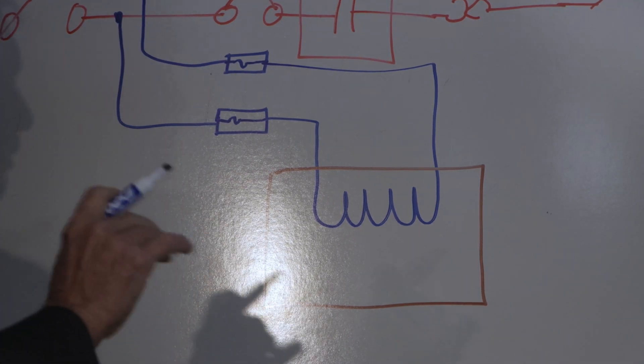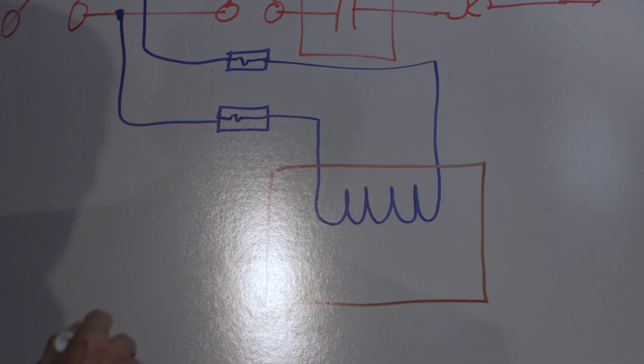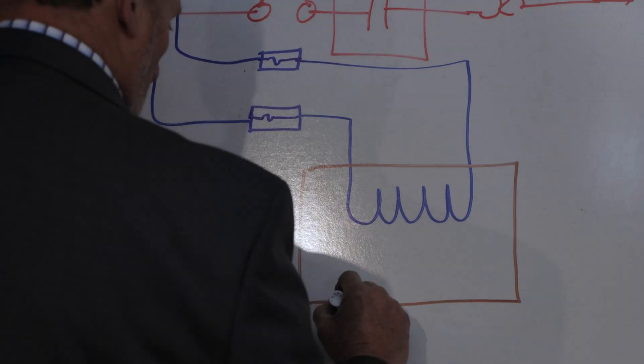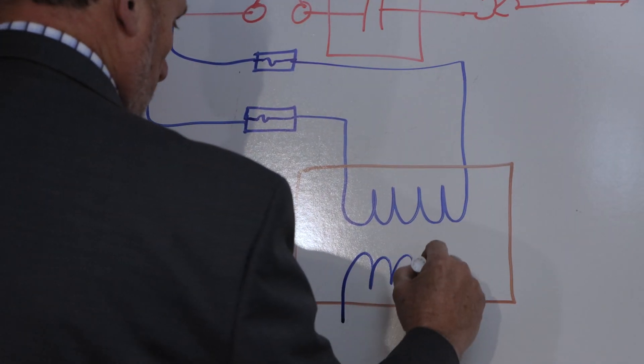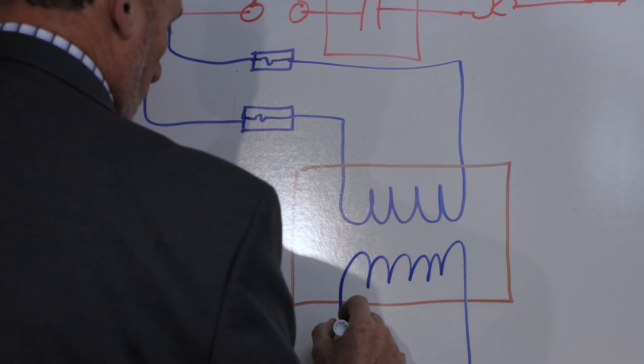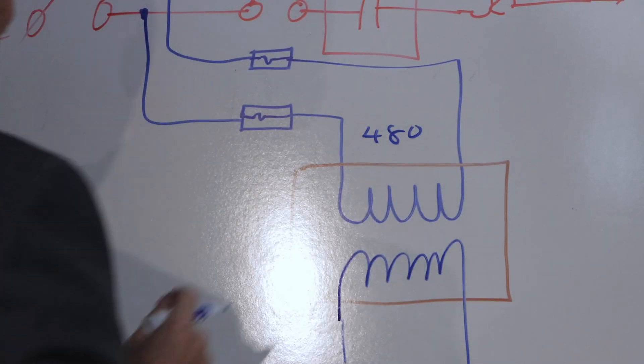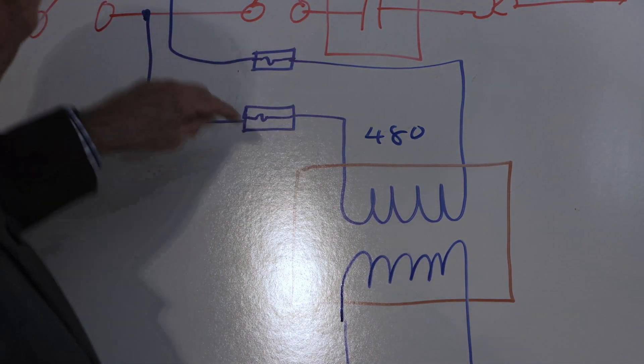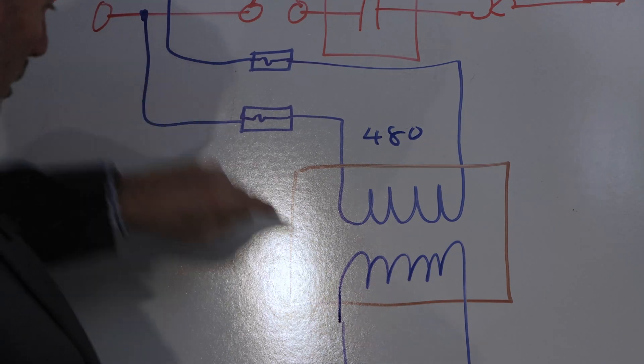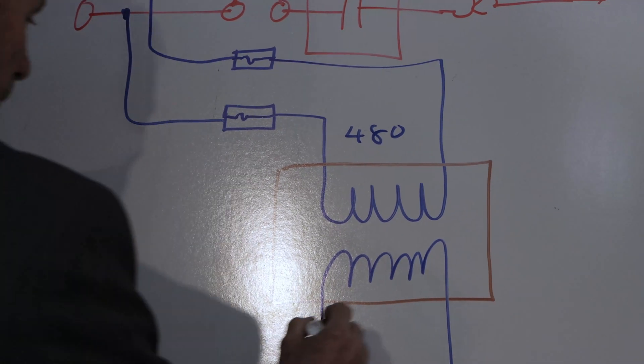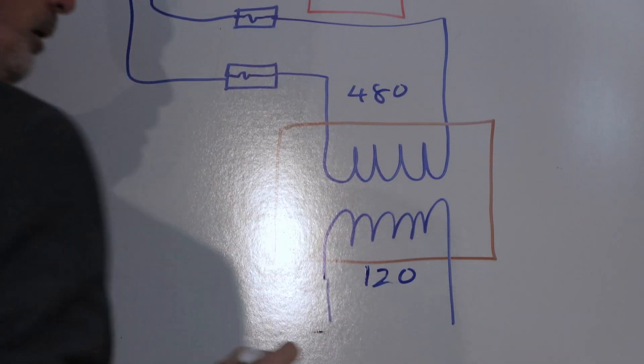On the secondary side, and this is the side that we're going to be working with, I'm going to have a secondary winding. And this is going to be my low voltage. So up here, I have 480. The only thing I did with a single phase 480 is I fused it. Coming off here, I've got 120.